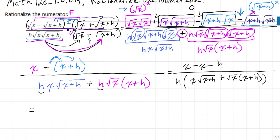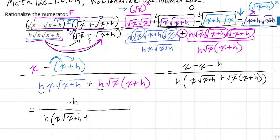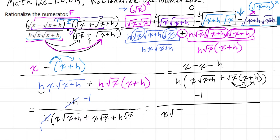In the numerator, x minus x is 0, leaving negative h. In the denominator, I have a positive h times the expression. I can distribute the square root of x over both terms to get x times the square root of x plus h plus h times the square root of x. Since h divides into itself once and h divides into negative h negative 1 times, the result is negative 1 over the quantity x times the square root of x plus h plus x times the square root of x plus h times the square root of x.